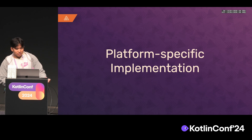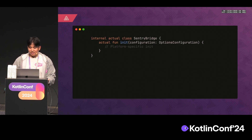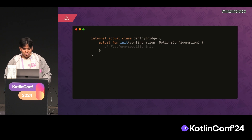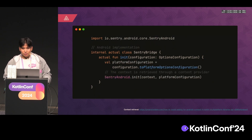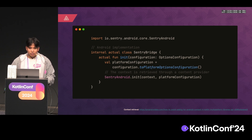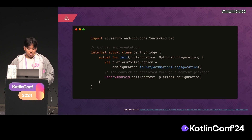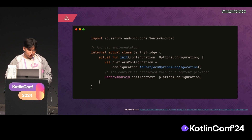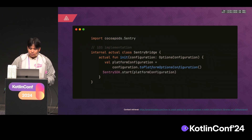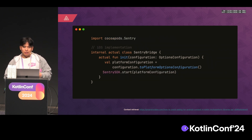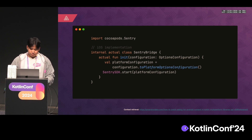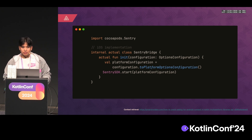Since we've now embedded our native SDKs as dependencies, we can use them directly. For Android, we just use SentryAndroid.init. There's a step here where we convert the configuration to a platform-specific configuration, because the options configuration is defined in our common class and the platform initializer doesn't know how to handle it. So we have to convert it to the platform-specific configuration — and the same applies for iOS.